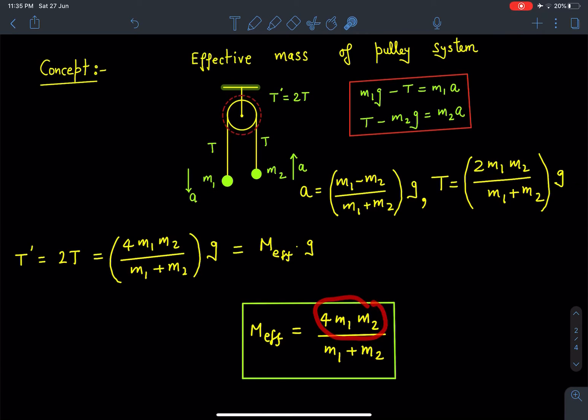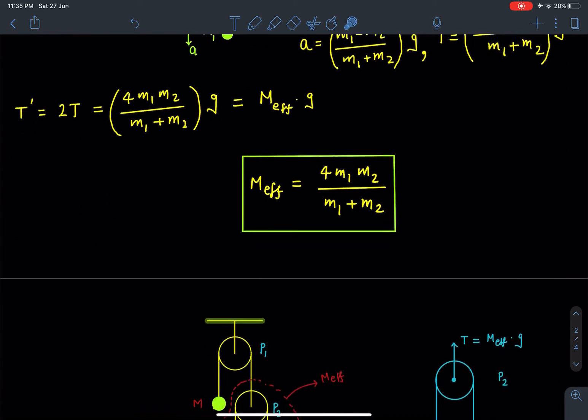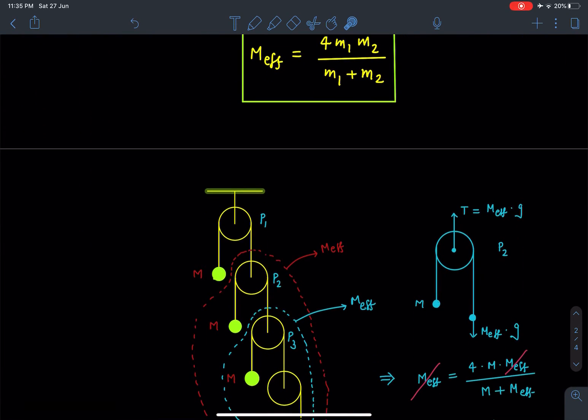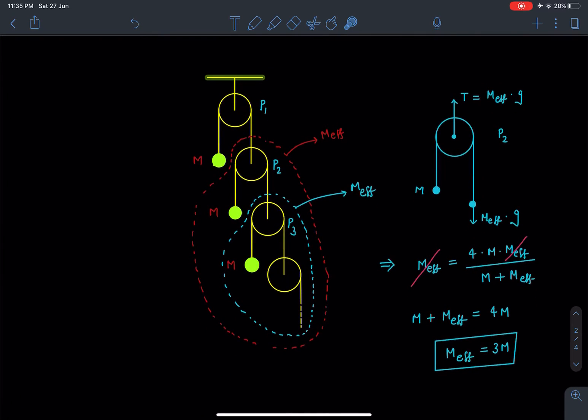Let's move to the question now. As you can see in the diagram, mass A has mass M. The rest of the pulleys up till infinity I am covering in this red dotted curve and calling this mass M_eff.